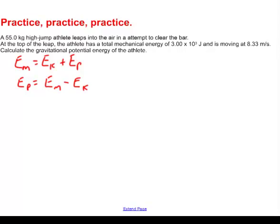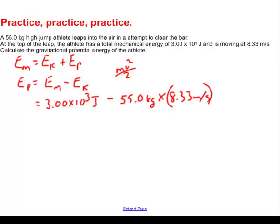Well, we already know some of these answers. We already know, for example, that the mechanical energy was 3.00 times 10 to the third joules. Now what about the kinetic energy? Well, we're going to have to calculate that one, I'm afraid. Kinetic energy, if you remember, is mass times velocity squared divided by 2. So the mass of this athlete is 55.0 kilograms. His velocity was 8.33 meters per second, and that has to be squared. Again, kids are always forgetting that. And don't forget to divide that by 2.